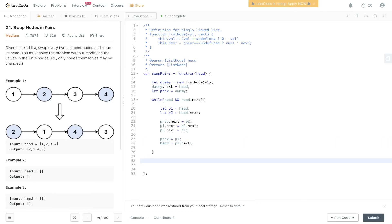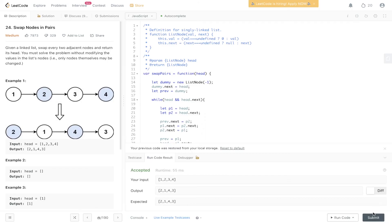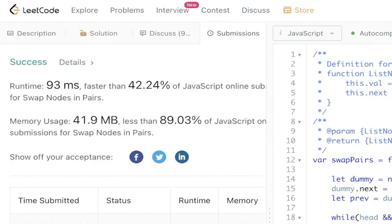And then what we need to return is dummy.next, the node we created at the start. We need to return its next value. Let's give this a run. Submit it. And there you go.